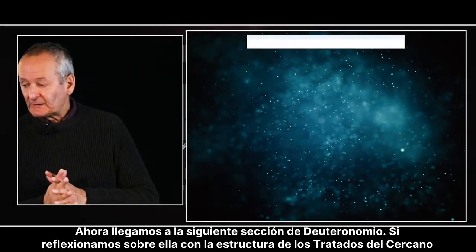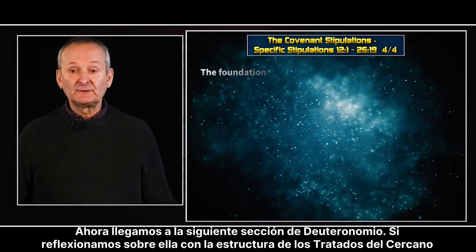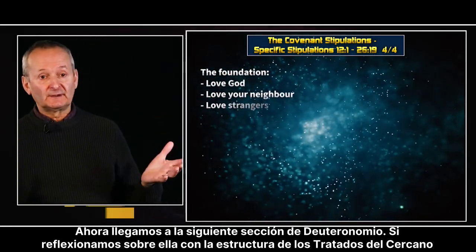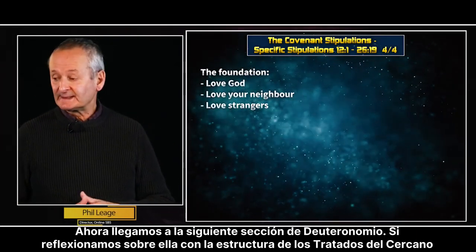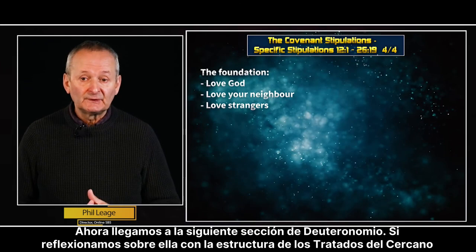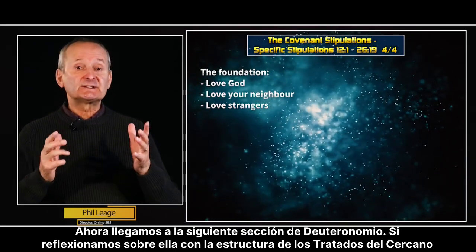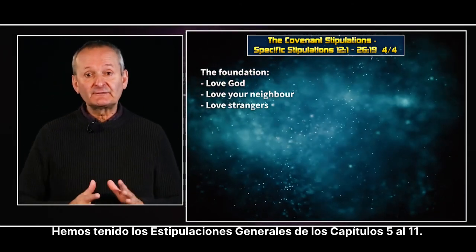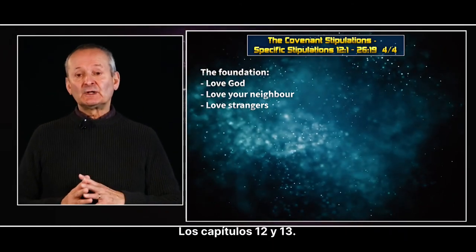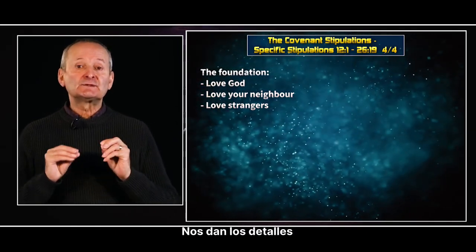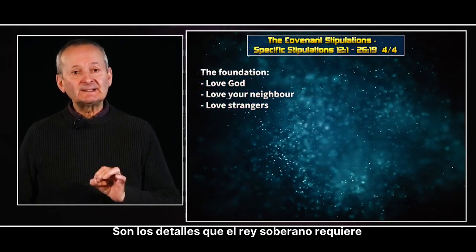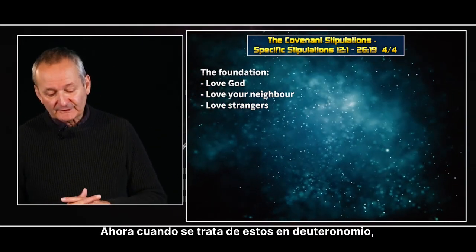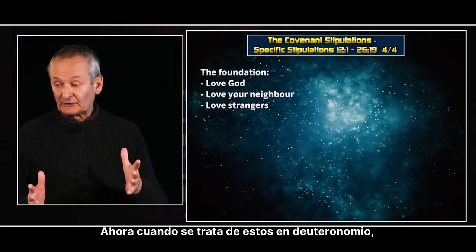We now come to the next section of Deuteronomy. If we reflect on it with the structure of the ancient Near Eastern treaty, we now come to what has been known as the specific stipulations. We've had the general stipulations in chapters 5 through 11. Chapter 12 following now gives those details — it's the details that the suzerain is requiring.